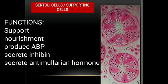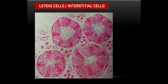Sertoli cells also secrete a hormone called inhibin, which inhibits the release of follicle-stimulating hormone from the anterior pituitary. Another important function of the Sertoli cell is to synthesize the anti-Müllerian hormone, which inhibits the formation of the female reproductive system.